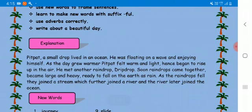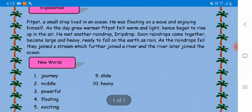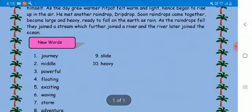In this play, we'll learn about Pitpat, a small drop who lived in an ocean. While floating on a wave and enjoying himself, as the day grew warmer, Pitpat felt warm and light, hence began to rise up in the air. He met another drop, Drip Drop.